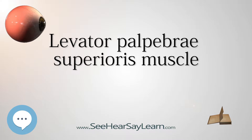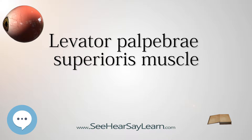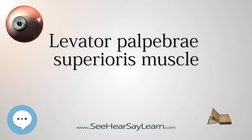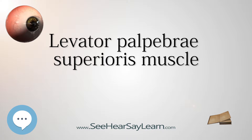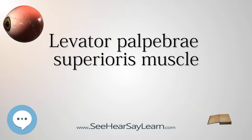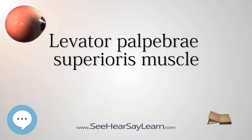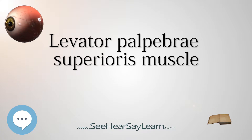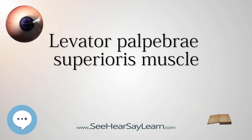Structure: The levator palpebrae superioris originates on the lesser wing of the sphenoid bone, just above the optic foramen. It broadens and decreases in thickness, becoming the levator aponeurosis. This portion inserts on the skin of the upper eyelid, as well as the superior tarsal plate.